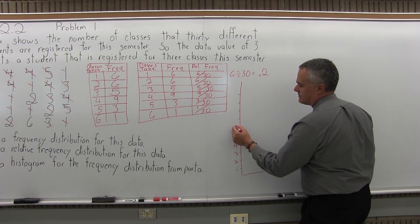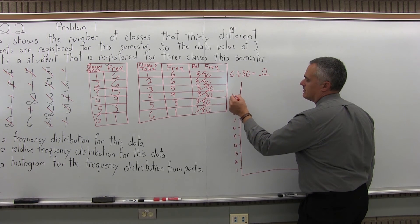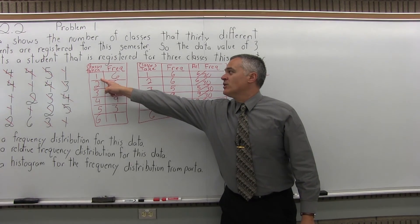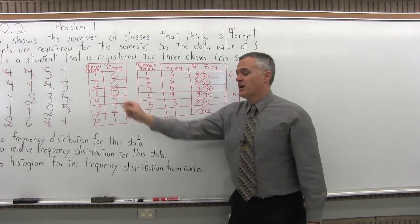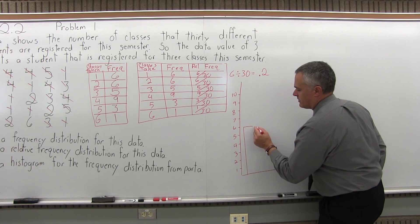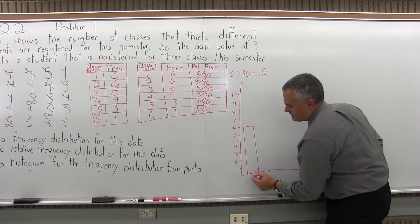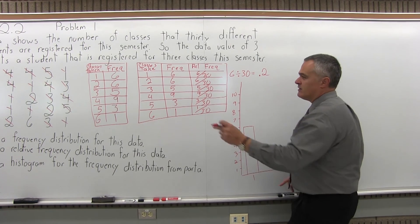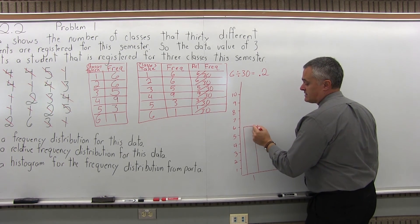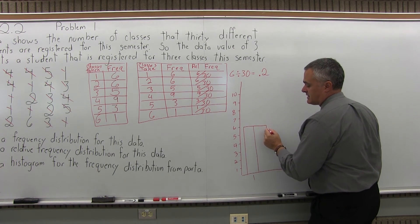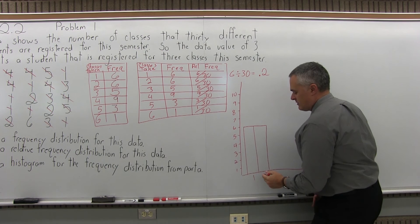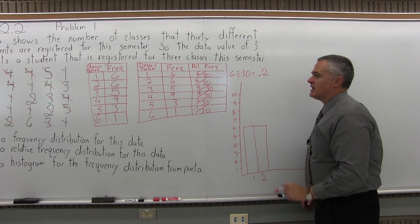The first bar for students taking only one class has a frequency of 6, so the height of the bar will be 6. Note that the bar is vertical, and under the center of the bar I put a 1 as the label for students taking only one class. The next bar for students taking two classes is also frequency 6, so the same height, also vertical. It touches the previous bar and gets labeled with a 2.